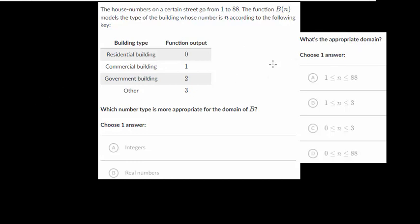So let's write down what the letters represent. We have b(n). And the function b(n) models the type of building. So that is the type of building. And notice that you only have these four choices, zero, one, two, and three, residential, commercial, government, or other.